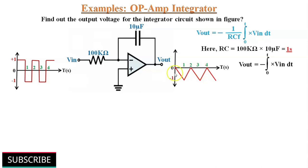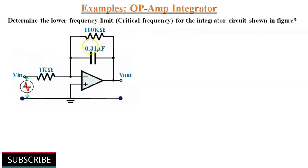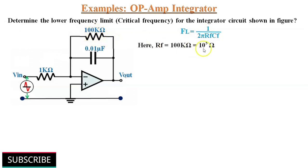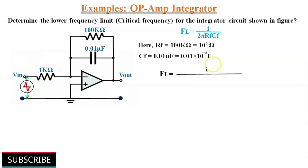Determine the lower frequency limit or critical frequency for the integrator circuit shown in this figure. The critical frequency is given by Fl equals 1 by 2πRf×Cf. Here Rf is 100 kilohm, which equals 10 to the power of 5 ohms, and C is 0.01 microfarad, which equals 0.01 multiplied by 10 to the power of minus 6 farads. Therefore Fl equals 1 divided by 3.14 multiplied by 10 to the power of 5 multiplied by 0.01 into 10 to the power of minus 6, which gives 159 Hz as the cut-off frequency. So the input signal frequency should be higher than 159 Hz.